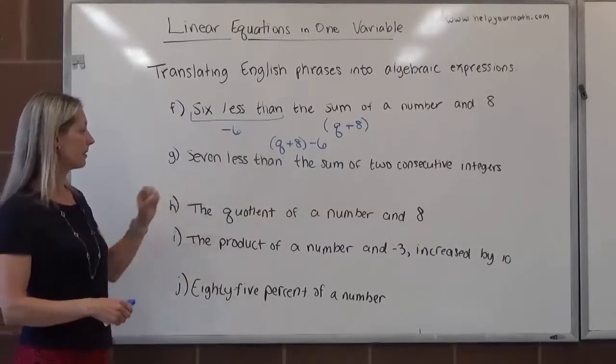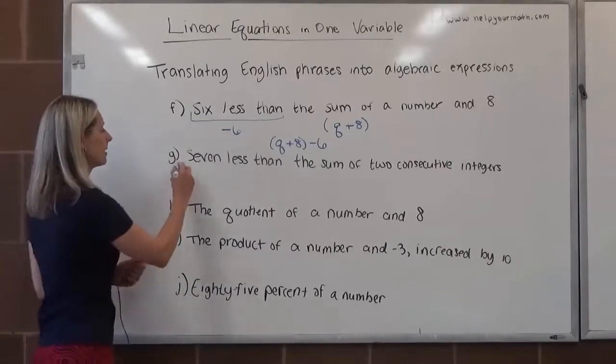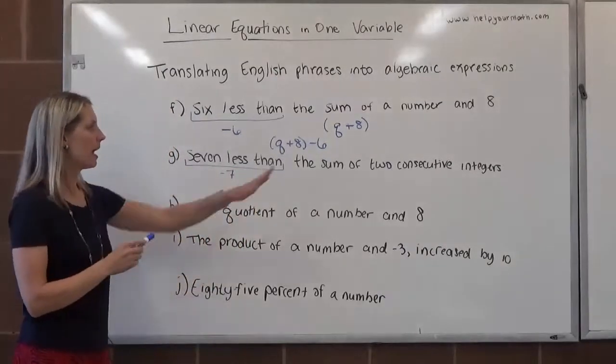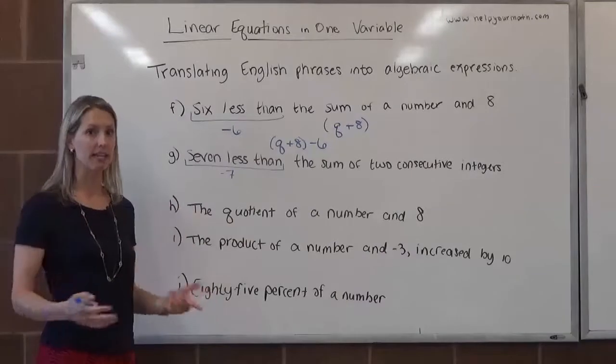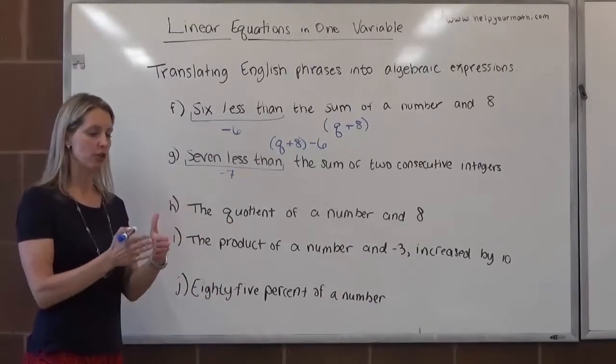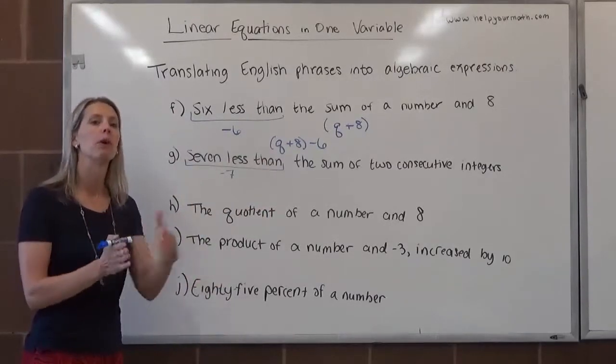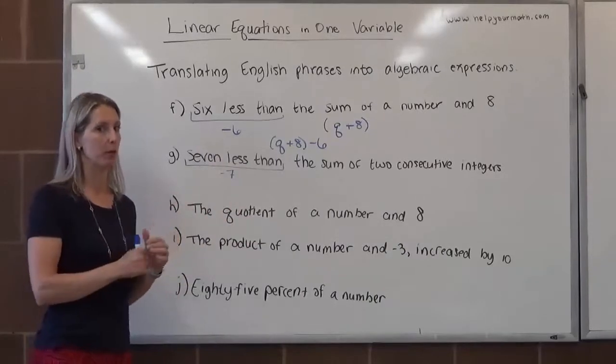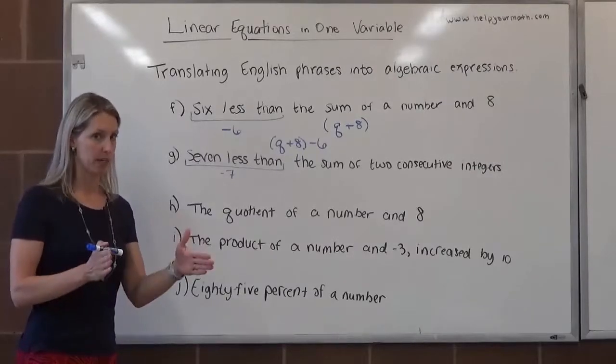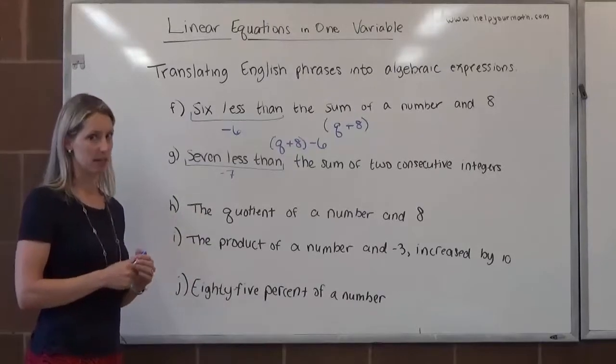Letter G, we have seven less than the sum of two consecutive integers. So here with the seven less than, that means that we're taking seven away from something, so it's going to be minus seven. Now, we need to kind of take an aside here and talk about what consecutive integers are. So consecutive integers, those are integers that's one right after the other. So two consecutive integers, for example, would be 21 and 22, because there's no integers in between 21 and 22. Another example, negative 41 and negative 40, because there's no integer between negative 41 and negative 40. We would call those consecutive integers.